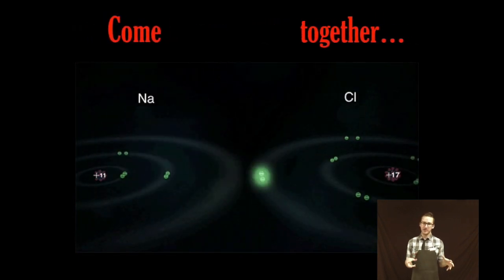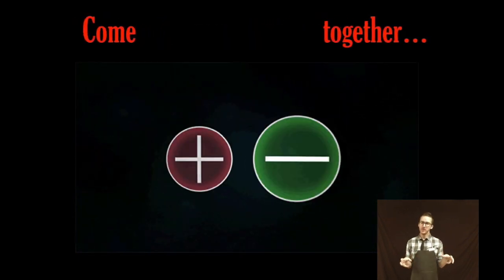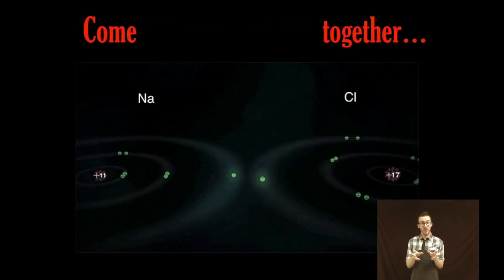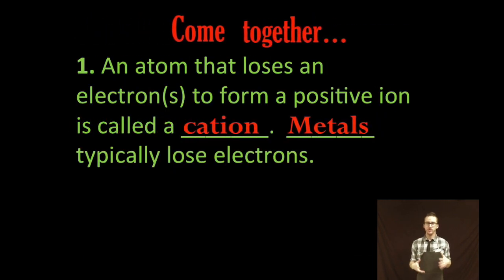Essentially you have two neutral atoms that form ions, and then those oppositely charged ions form a bond. Now a couple of important vocabulary words before moving forward.